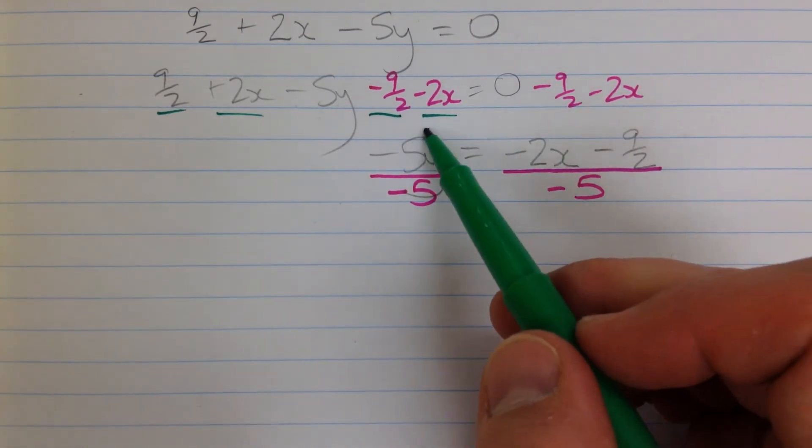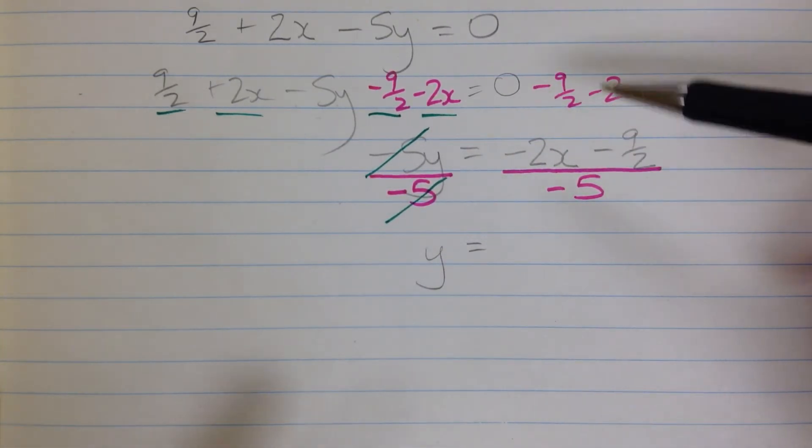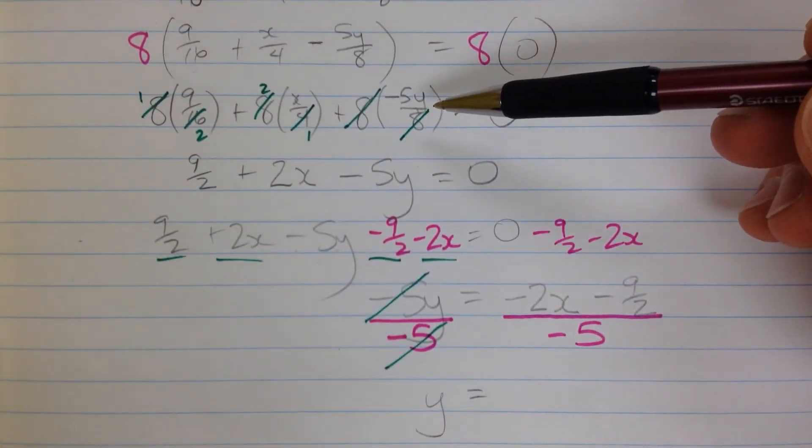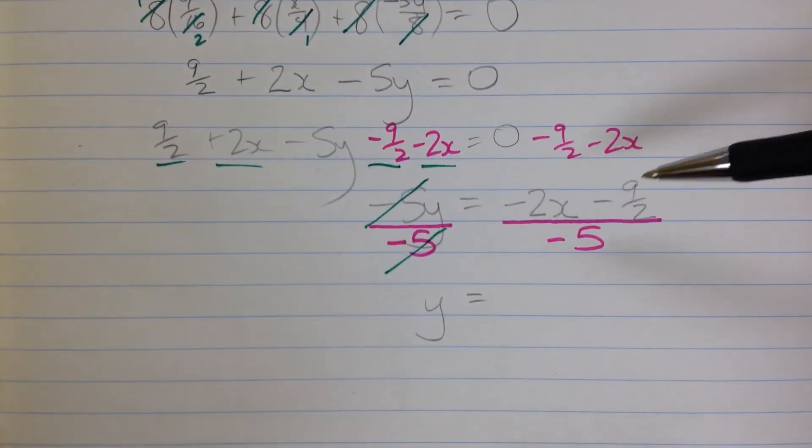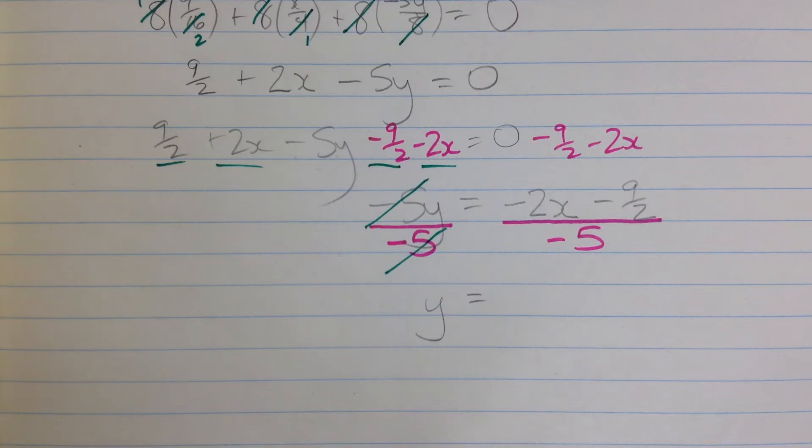Over here, the negative 5s will cancel, and I'm left with y. Over here, just like the distributive property for multiplication up here, the same thing has to happen for division. If I'm dividing these two things by negative 5, I have to divide each of them by negative 5.